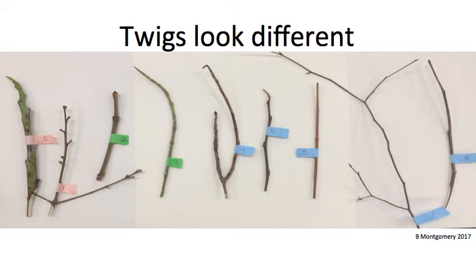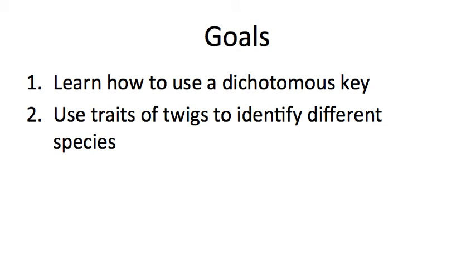This is important because it means that even in wintertime when trees do not have leaves, if we can access twigs we have a pretty good chance of figuring out what the tree is. So the goals for this lesson are: first, learning how to use a dichotomous key — dichotomous keys are used throughout biology to identify different groups of organisms from plants to insects or birds. Additionally, by working with twigs and looking carefully at their traits, you're going to get better at recognizing those traits.